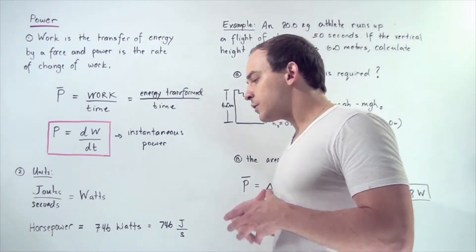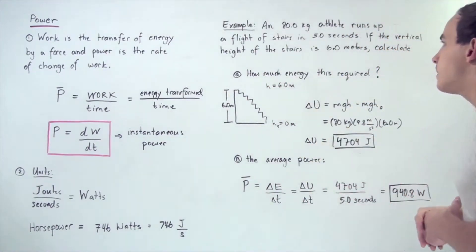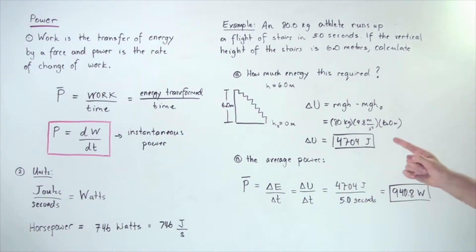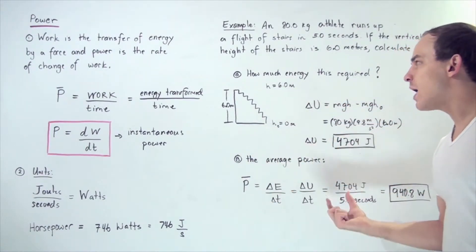In order to differentiate between energy and power, let's look at the following example. Let's suppose an 80 kilogram athlete runs up a flight of stairs in 5 seconds. If the vertical height of the stairs is 6 meters, we want to calculate A, how much energy this requires, and B, the average power.